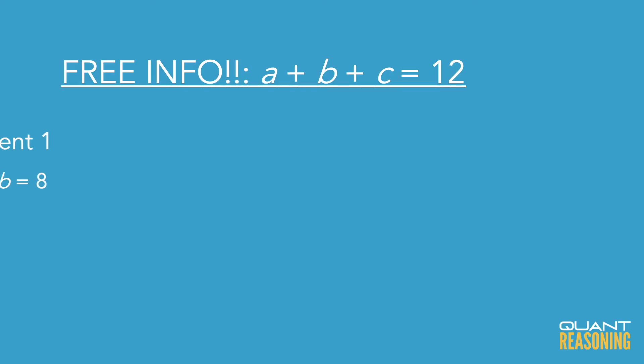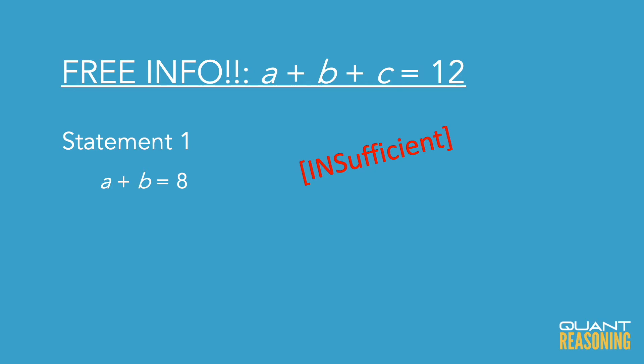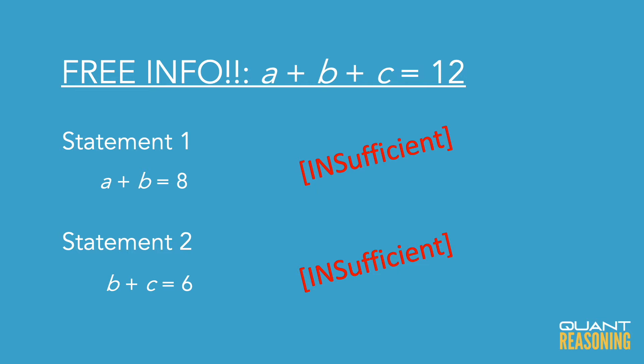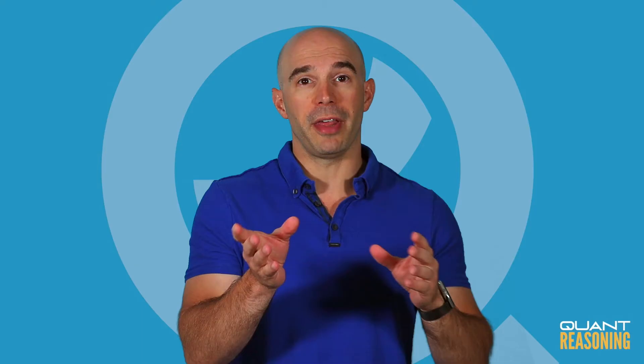Each statement on its own isn't going to be sufficient, because while it does give us the sum of b plus something — so it explains part of the 12 — there's no way for us to isolate, to figure out of a plus b, how much is a and how much is b. Or in statement two, of b plus c, how much of that is b and how much of that is c.